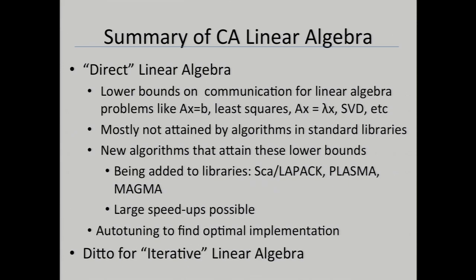Let me now state what the lower bounds are. This is for anything that smells like the usual three nested loops. State it in terms of a number M—that's a hardware parameter, your local memory. If moving data between DRAM and cache, M is the cache size. If moving data between processors over a network, M is the local memory on your processor—the cheap stuff to get. For all these algorithms, the number of words moved per processor is lower bounded by however many floating point operations that processor does, divided by the square root of its local memory size.